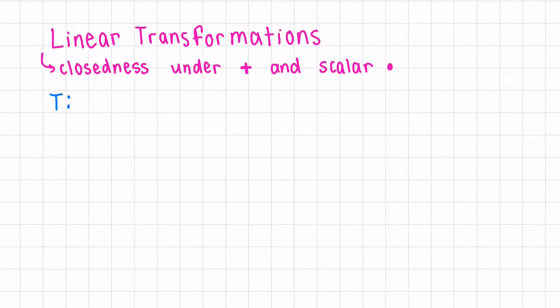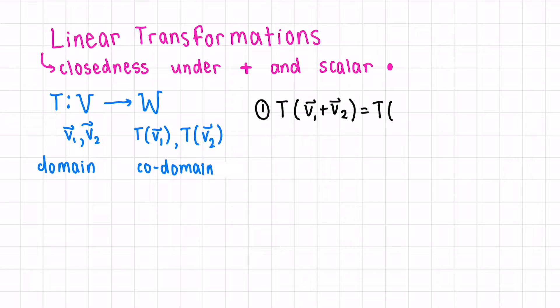Let's call our transformation T, where we're going from a vector space V to a vector space W. If we start with any two vectors in our vector space V, let's say V1 and V2, when we apply the transformation, we'll get the transformed version of V1 and the transformed version of V2. V could be thought of as our domain, and W as our co-domain, where the transformed vectors live. Closedness under addition means that if we take the transformation of the sum V1 plus V2, this is the same as doing the transformation of V1 and then adding the transformation of V2.